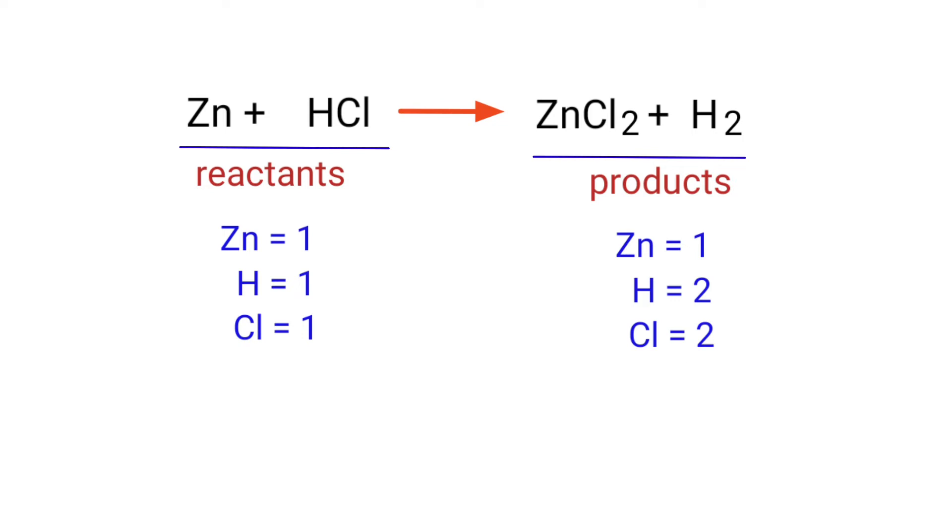In this equation, we need to balance the Hydrogen and Chlorine atoms. To do this, we need to put a coefficient of 2 in front of HCl.